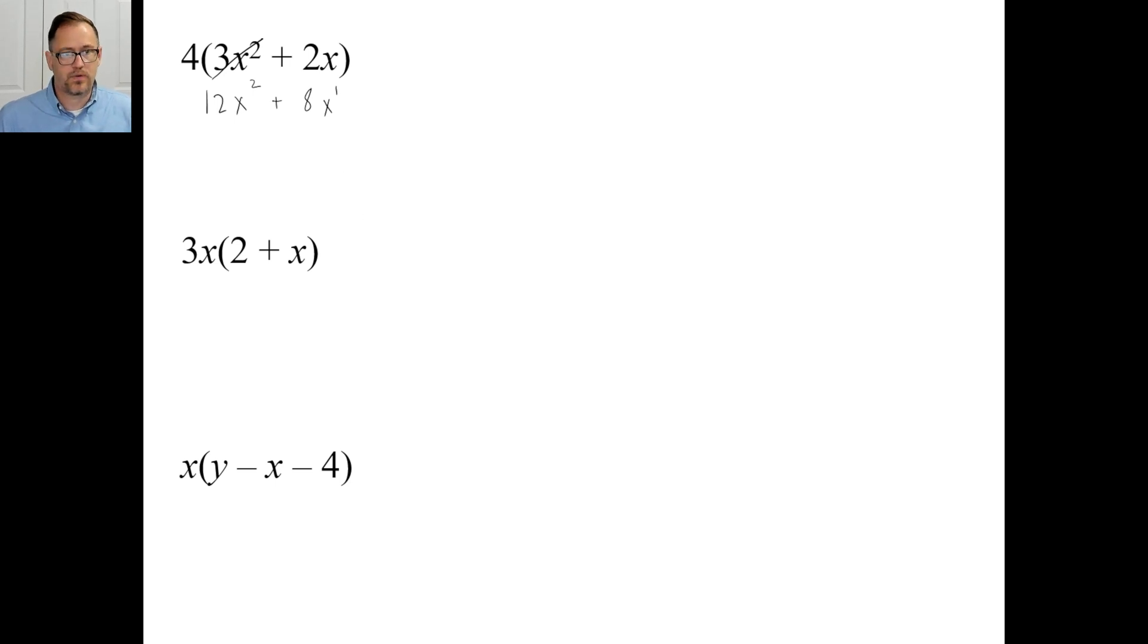All right, well, 3x times 2 is 6x. 3x times, you can think of this as 1x. Don't try to add these. Remember, you're multiplying. 3 times 1 is 3. x to the first times x to the first is x to the second, or x squared. There you go. Don't try to add these together. They're not like terms. That's an x to the first power. That's an x to the second power. Okay, pause and try c.